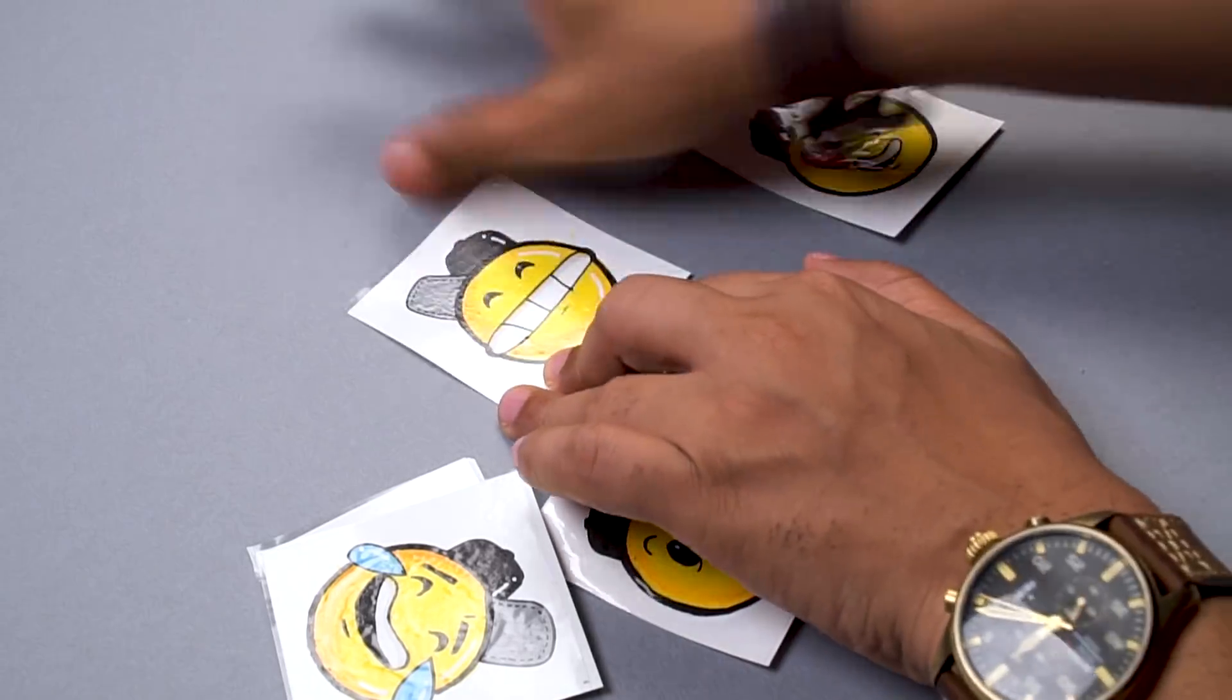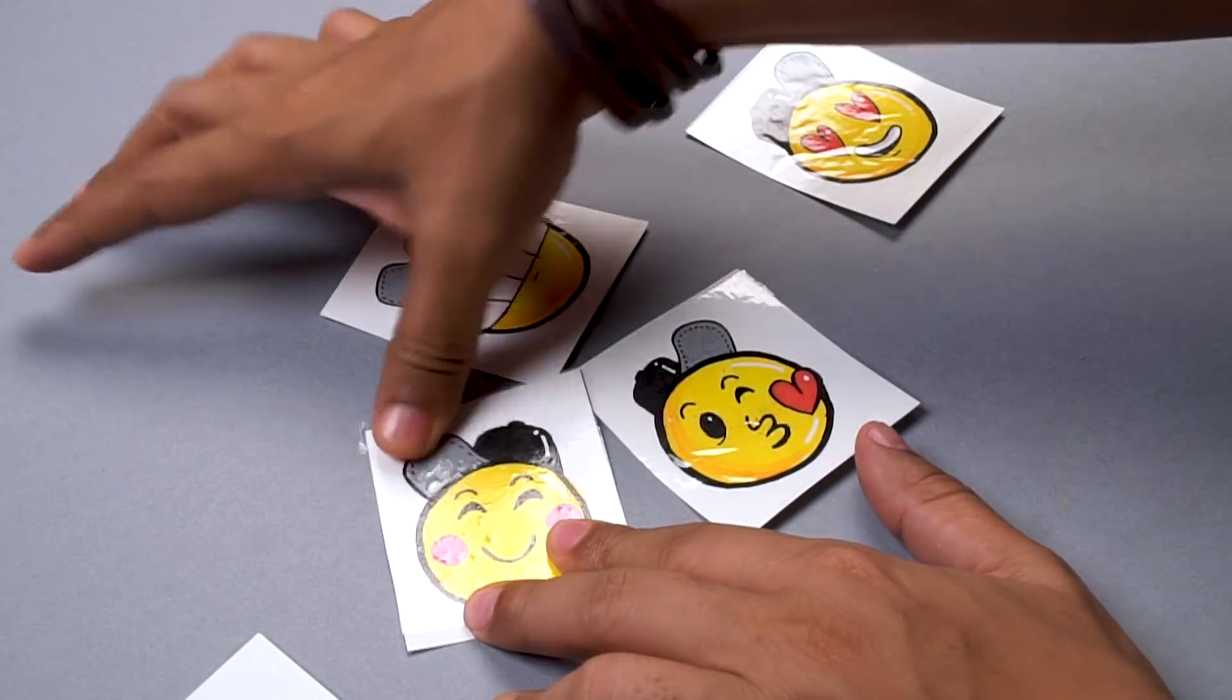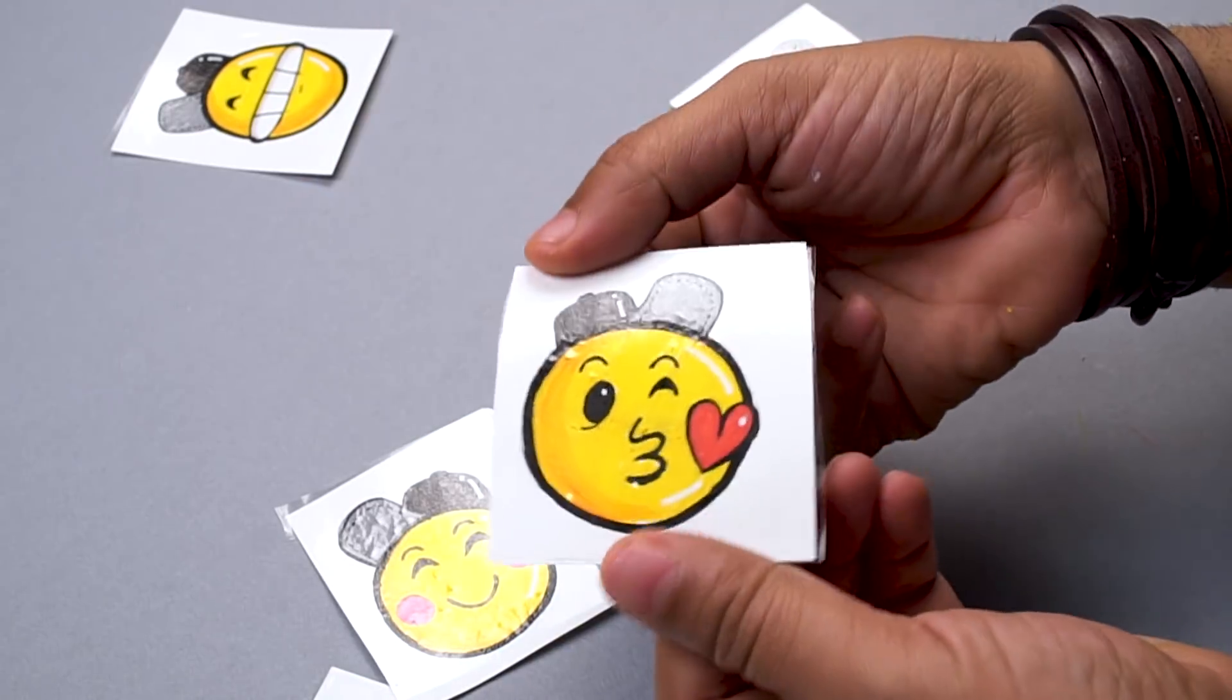There you go. You can see now it has a nice glossy finish. If there are any air bubbles, you can just press it down so it has a nice even glossy finish. See, it actually looks like an actual sticker because of this glossy finish.